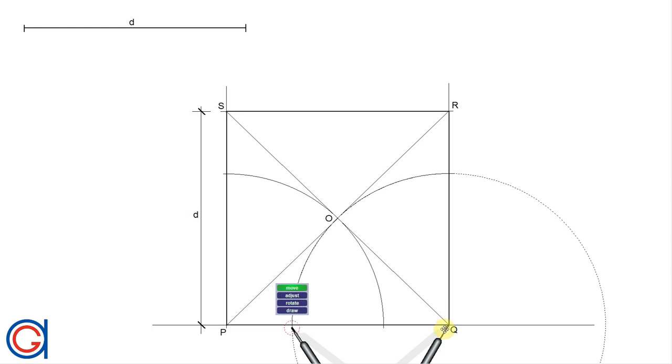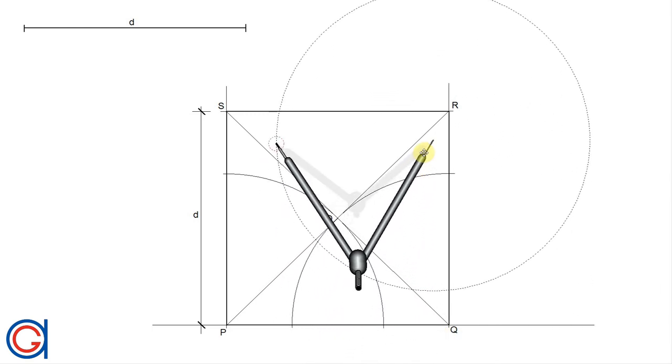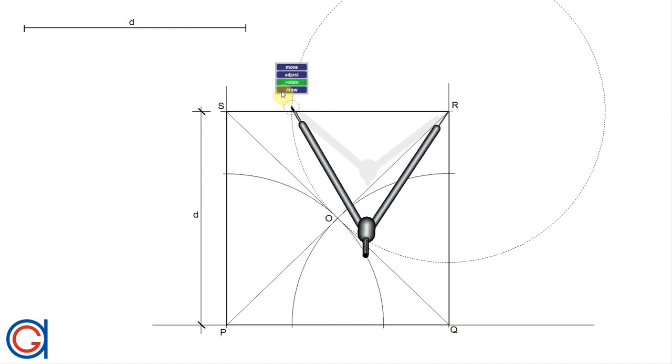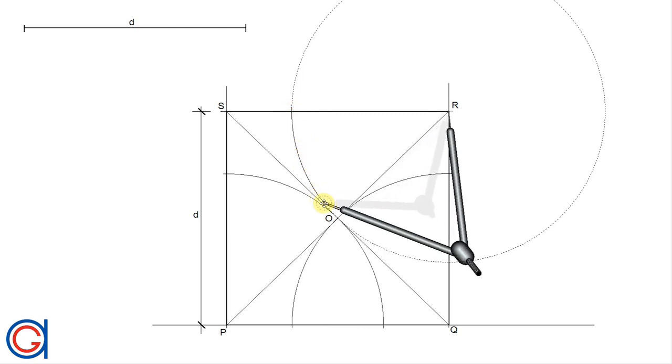So now continuing, setting our compass on vertex R and with the same radius, we scribe another arc, cutting the top side of the square and the right side, as can be seen here.